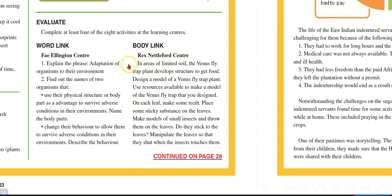The Body Link section from the Rex Nettleford Center: in areas of limited soil, the Venus flytrap plant develops structures to get food. Design a model of the Venus flytrap plant and use available resources to make it. On each leaf, make some teeth — can you imagine a plant with teeth on the leaves? Then make models of small insects and place them on the leaves. Do they stick? Manipulate the leaves so that they shut when the insect touches them.